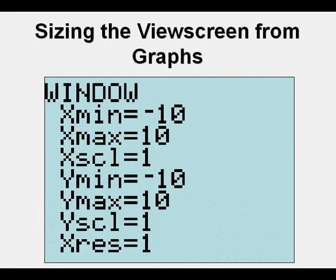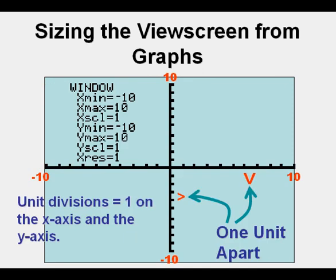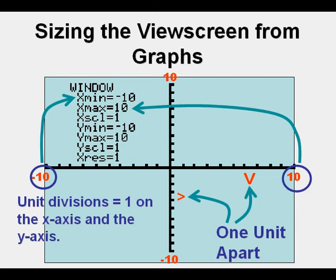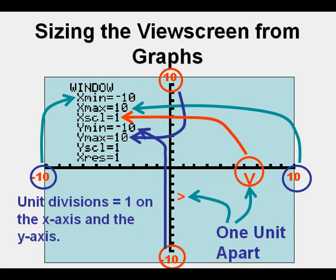Going back to our window, we're going to inset it into the view screen of our calculator and look at what these settings mean. The x-min setting shows negative 10, the lowest value of x. The x-max setting shows 10, the highest value of x. The y-min setting shows negative 10, and y-max shows positive 10. The unit divisions are 1 apart, so x-scale and y-scale are both 1.